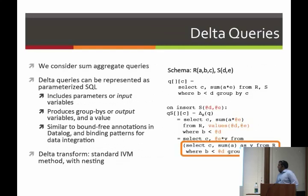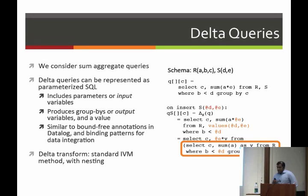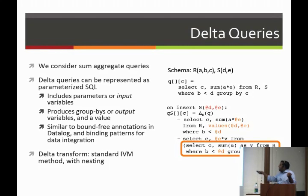Our contributions here are a recursive delta compilation algorithm that yields a fully incremental query processor. A key property is that given a delta query at level k, it has a lower degree — degree being a measure of query complexity — than a k-minus-1 level delta, and that guarantees termination. The materializations are done as simple associative map data structures in memory. Let's go through this in more detail, starting with delta queries. The workloads we consider are aggregate queries, including group-wise. What does a delta query look like? It really is just a simple parameterized SQL query.